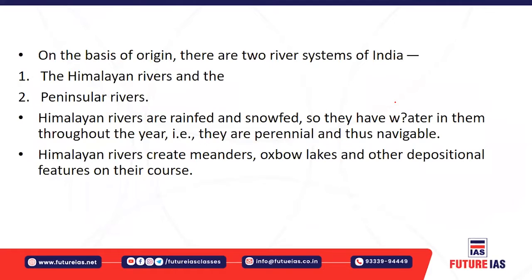On the basis of origin, there are two river systems in India: the Himalayan river system and the peninsular river system. The Himalayan rivers originate from the higher reaches of the Himalayas, flow through hilly areas, and then enter the plains. The peninsular rivers also originate from hilly areas, but they are located in the plateau regions of peninsular India.